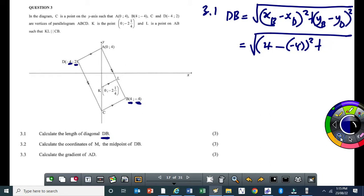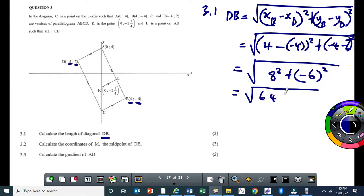Let me just check. y value at B is minus 4, that's correct, then y value at B is minus 4 minus the y value at D is 2. If you simplify, you will get 8 squared plus minus 6 squared. So this will give us 64 plus 36. You'll get the square root of 100 which gives us 10 units.